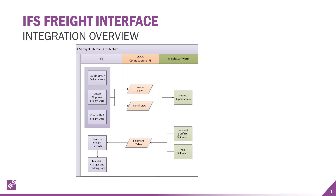The freight software then gets the rates and you confirm the shipment. You can void shipments and that will write back to IFS and cancel the shipment, cancel the charges and such. When you confirm that shipment, it runs through the shipment table, processes the freight records, and maintains the data, charges, and tracking data on the IFS order side.